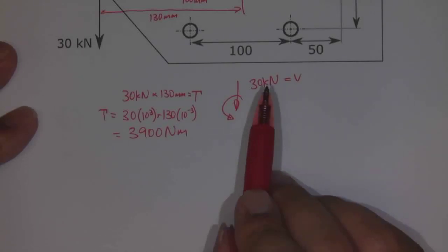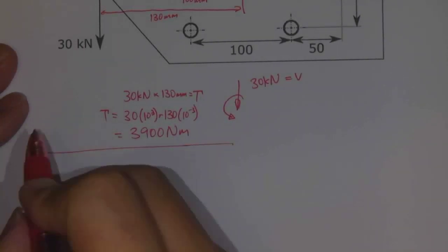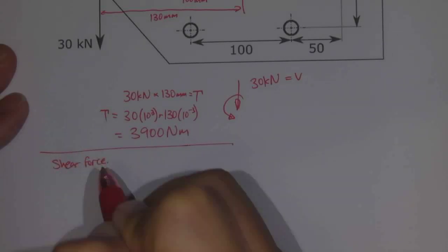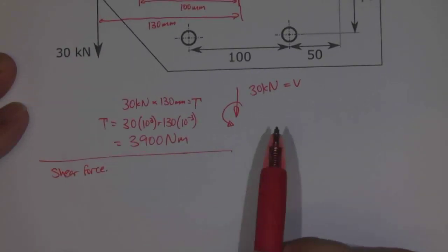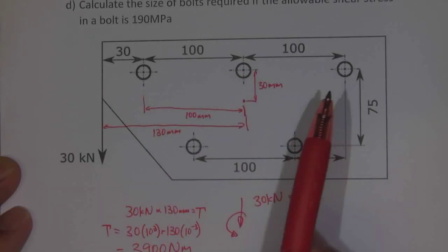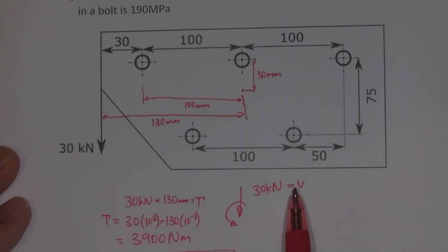So for the shear force, we can assume that each one of these bolts, 1, 2, 3, 4, 5, equally supports the shear force.